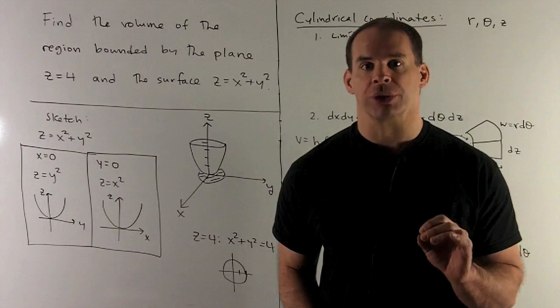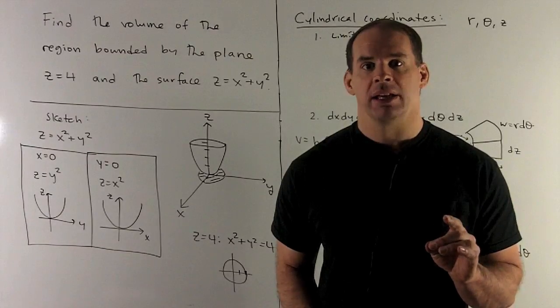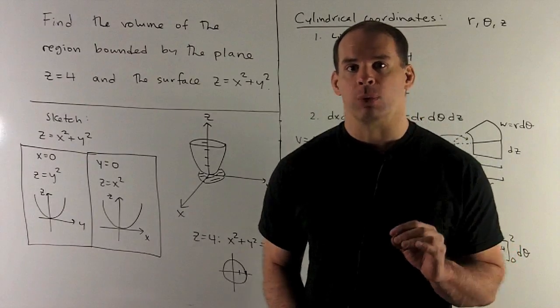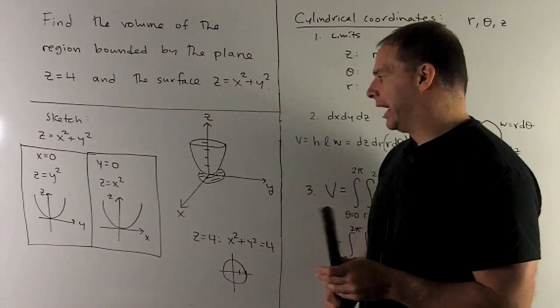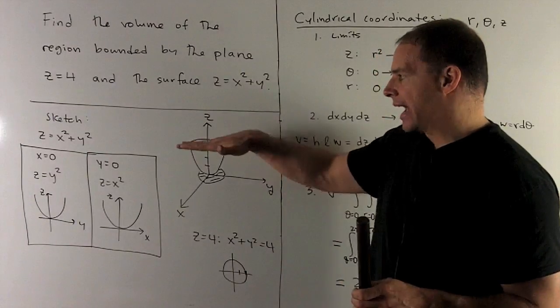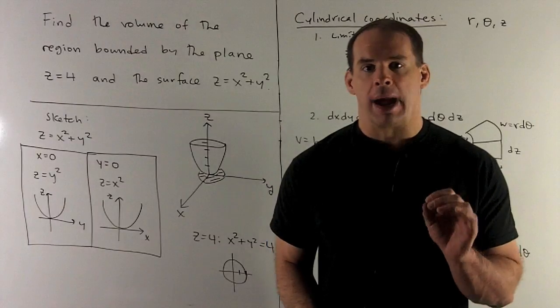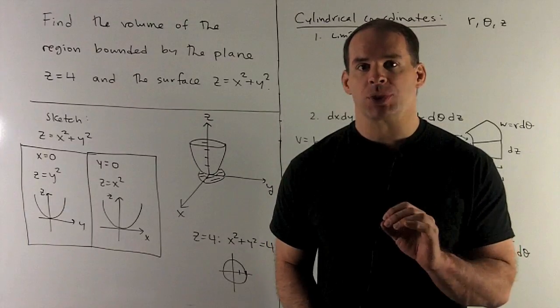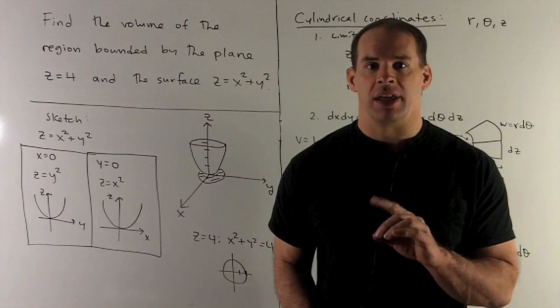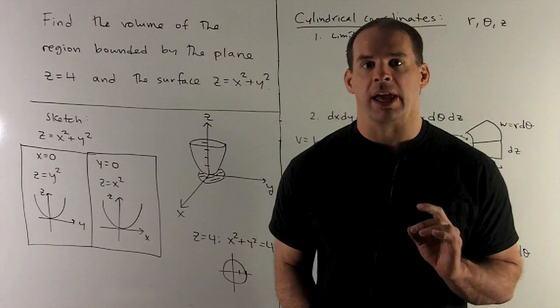First, I need to sketch our region. So the plane z equals 4, we mark off 4 in the z-axis, and then our plane is perpendicular to the z-axis through that point. The paraboloid z equals x squared plus y squared, take some traces, and then that'll give us a general idea of what we're looking at.